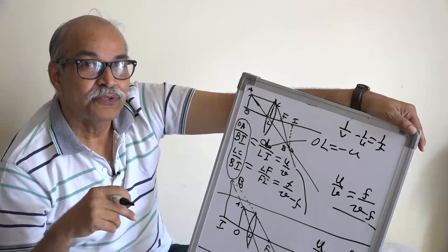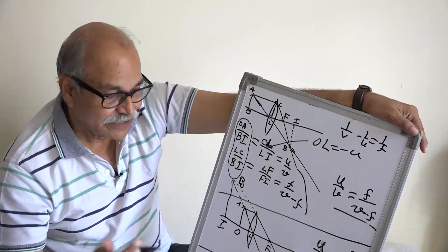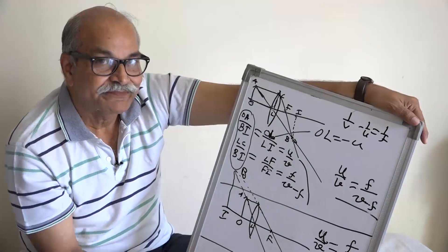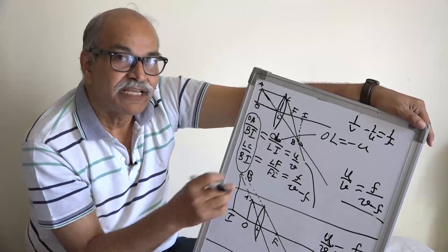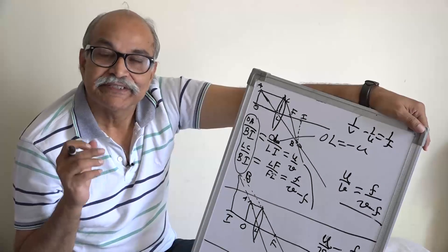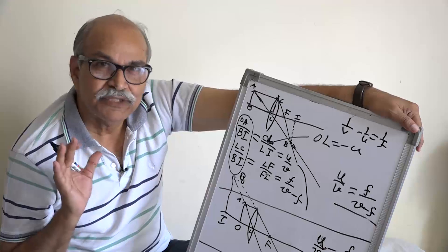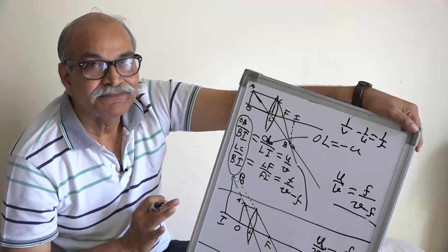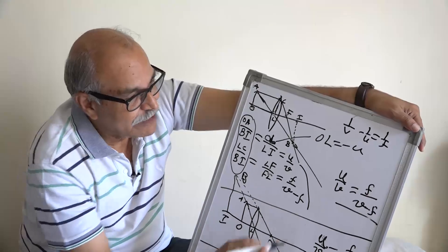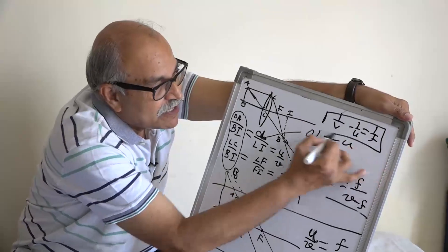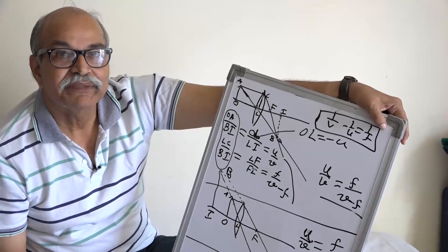Once you go to the coordinates, then whatever is the situation, convex lens, concave lens, real image, virtual image, whatever be the situation, you always get the same formula 1 by V minus 1 by U equal to 1 by F.